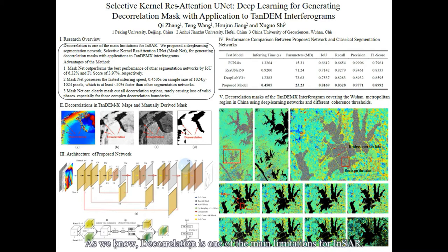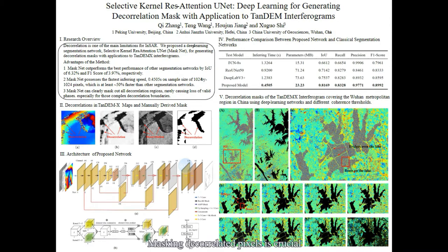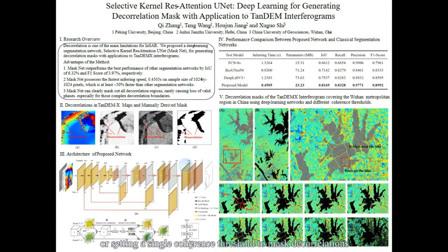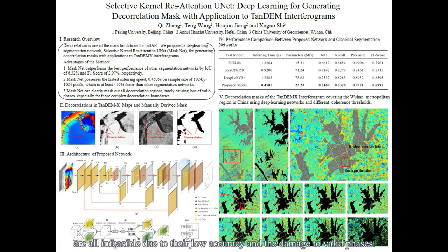As we know, decorrelation is one of the main limitations for InSAR. Masking decorrelated pixels is crucial for retrieving information from interferograms. However, for traditional masking methods, whether manually drawing masks or setting a single coherence threshold to mask decorrelations, both are infeasible due to their low accuracy and damage to valid phases.